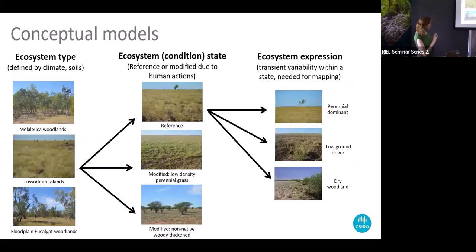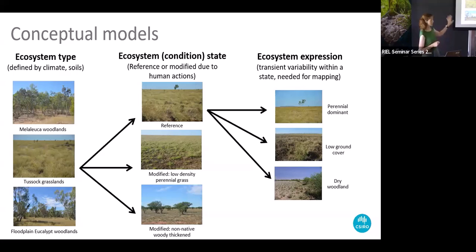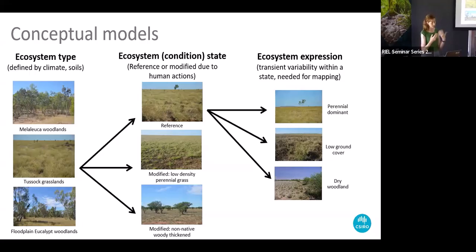Here are some ecosystem types in the Flinders, Norman and Gilbert river catchments, where we used state and transition models and the Australian Ecosystem Models Framework to develop conceptual models for each ecosystem type — there are actually about six or seven in total. Each ecosystem type corresponds to an archetype model, published in booklets you can download from the web, with box-and-arrow diagrams, text and photos. We bring them to workshops to articulate a reference state for each ecosystem type.